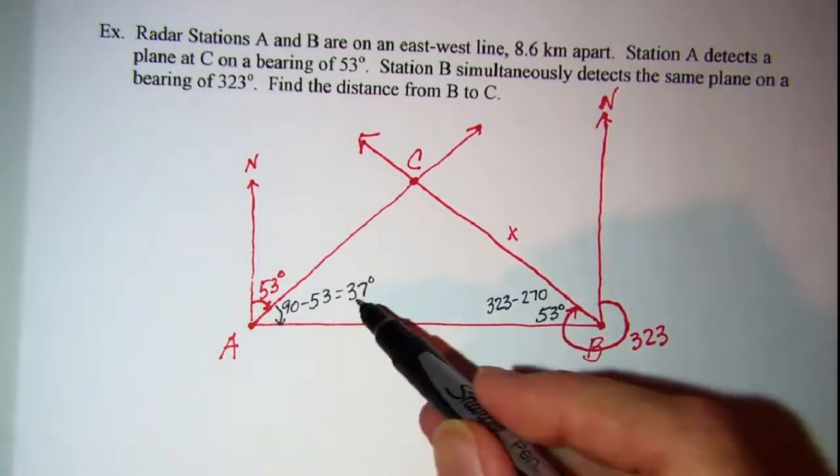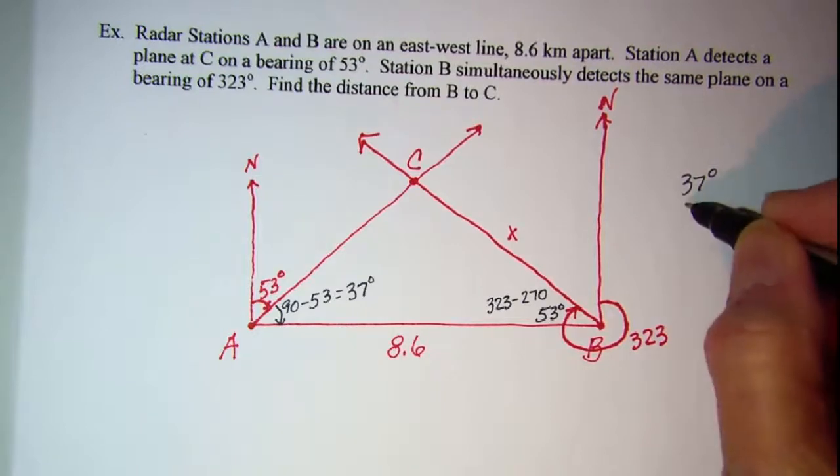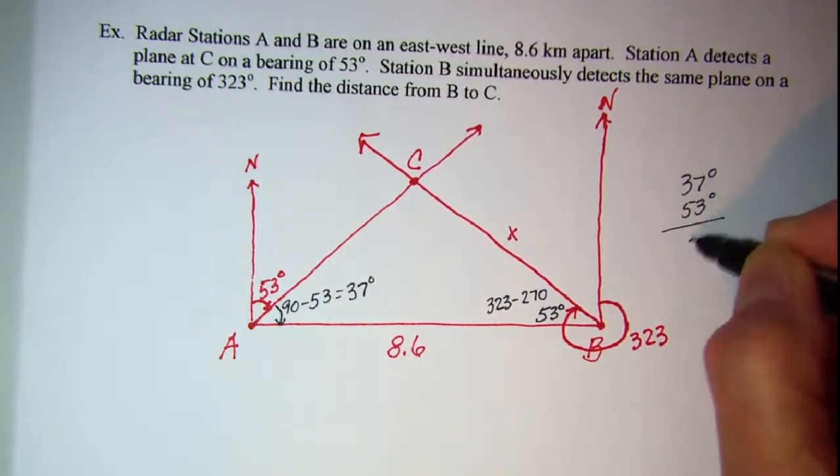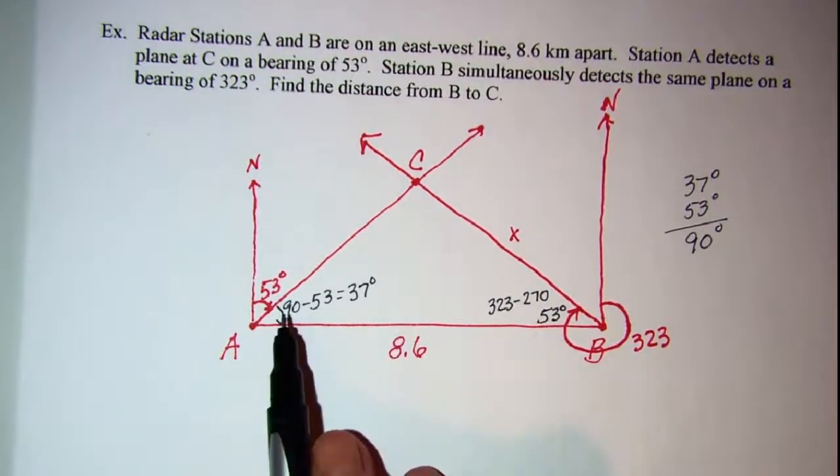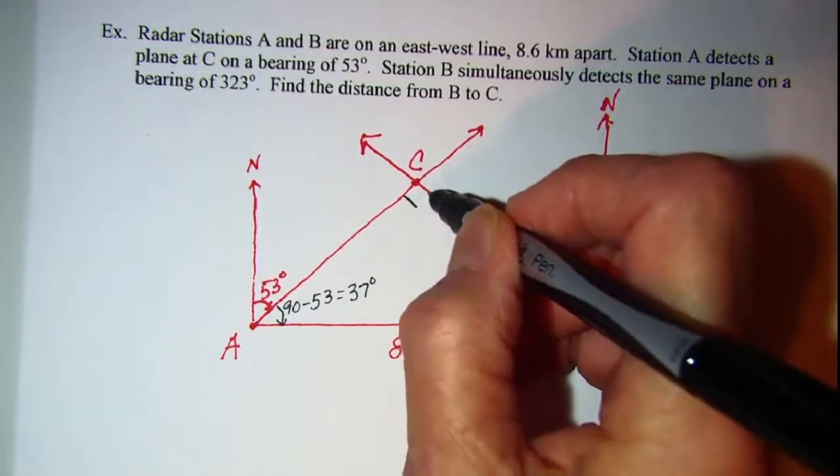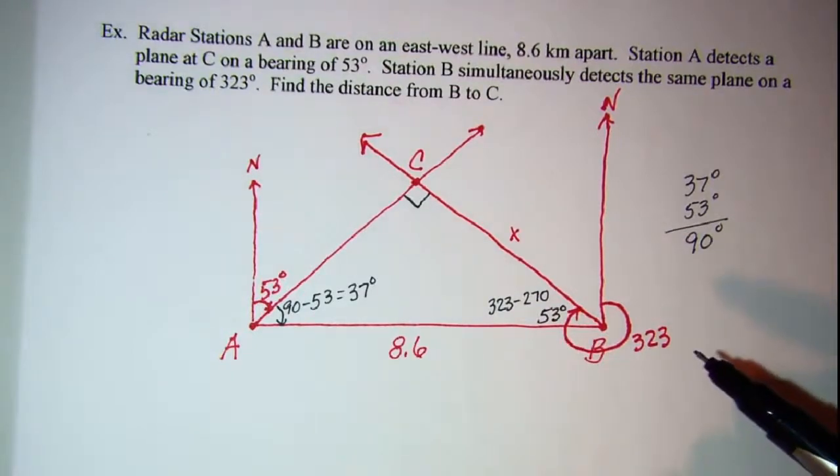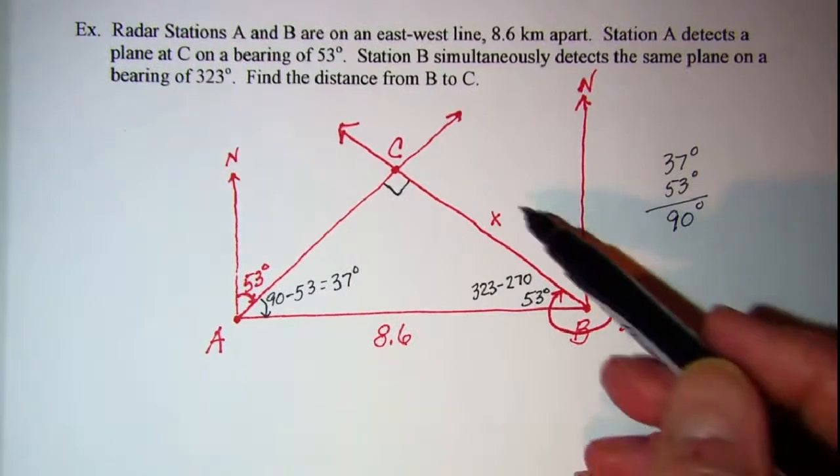Now if I add these two up, 37 degrees and 53 degrees, I see that I have 90 degrees. So these are my two acute angles, and then this is going to be my right angle. So this is indeed a right triangle, and we can use right triangle trig to solve for X.